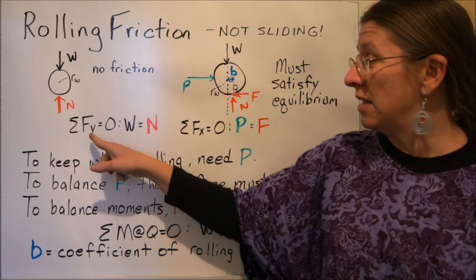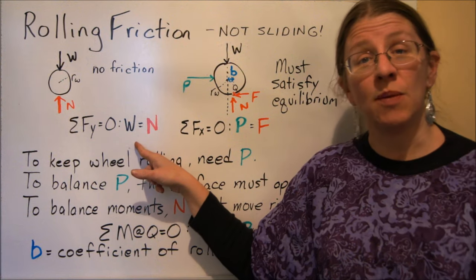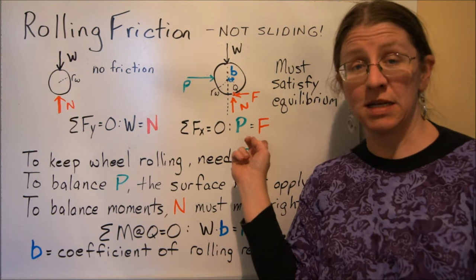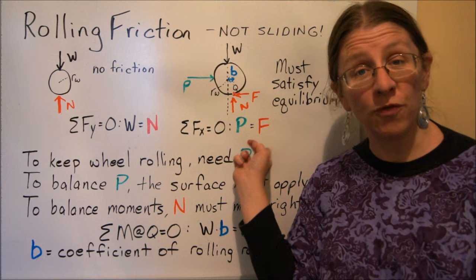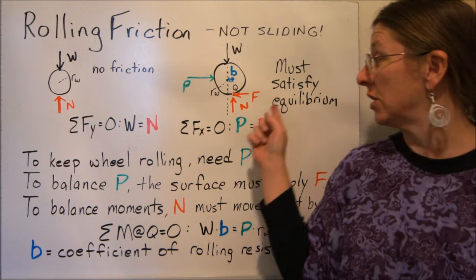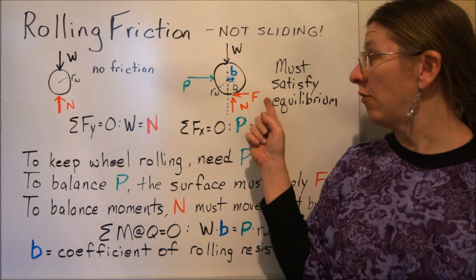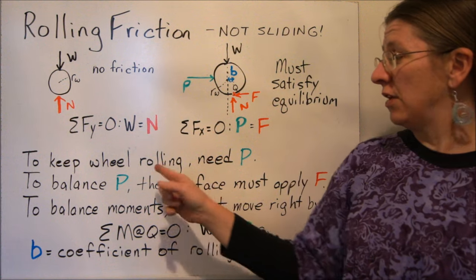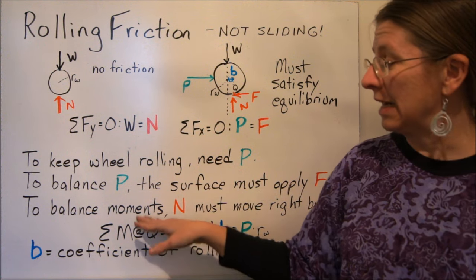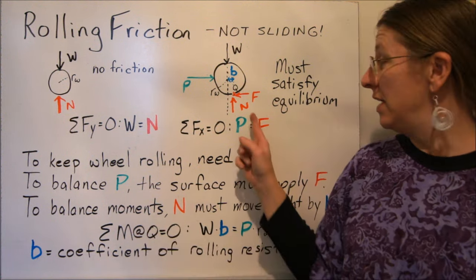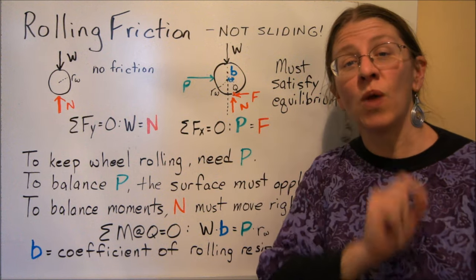As soon as you have this, now your sum of the forces in Y tells you that W equals N. Sum of the forces in X tells you that P has to equal some sort of horizontal reaction force, friction. So there has to be this sort of F. Now, the other thing that you need to keep knowing is that to balance the moments, this normal force can't act right under the weight.